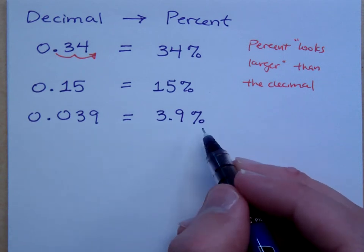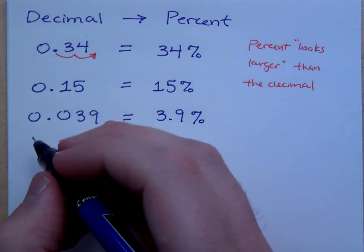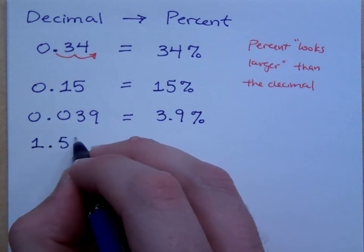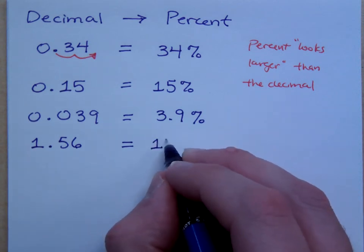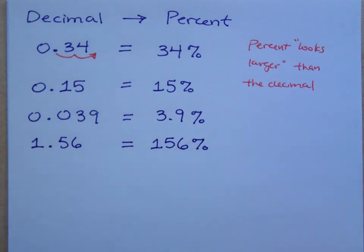3.9 percent. If you don't put the percent symbol, then you're not going to be right. What if I have 1.56? This is 156%. Please understand that 1.56 is not 156, it's 156%. You have to make sure that you write things correctly.